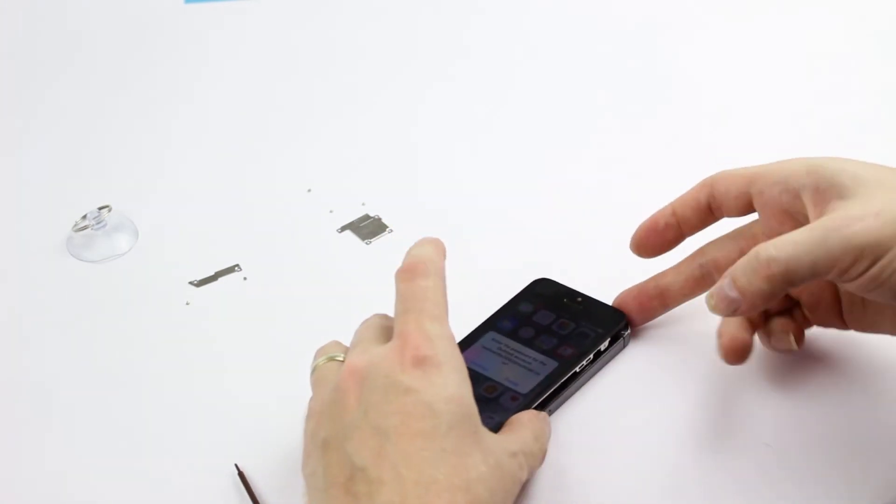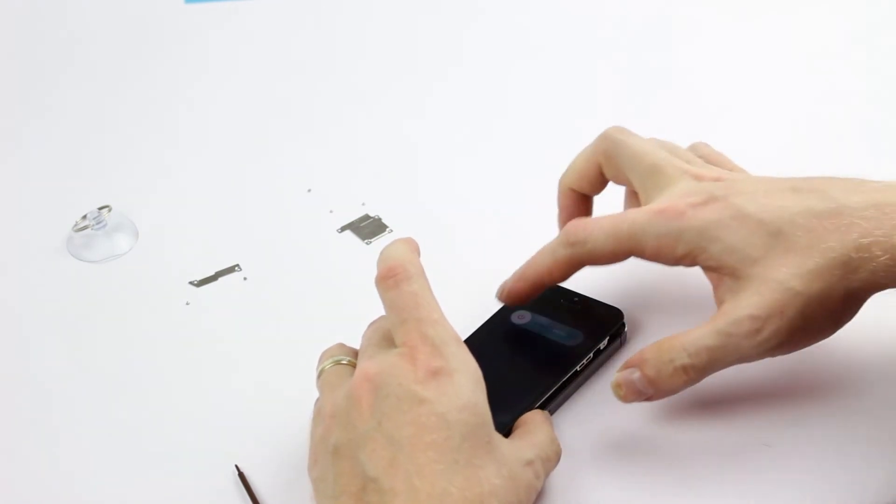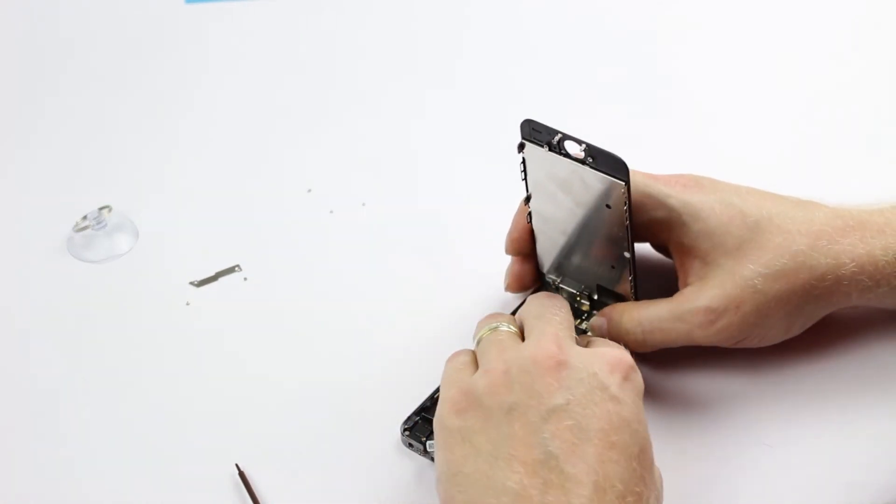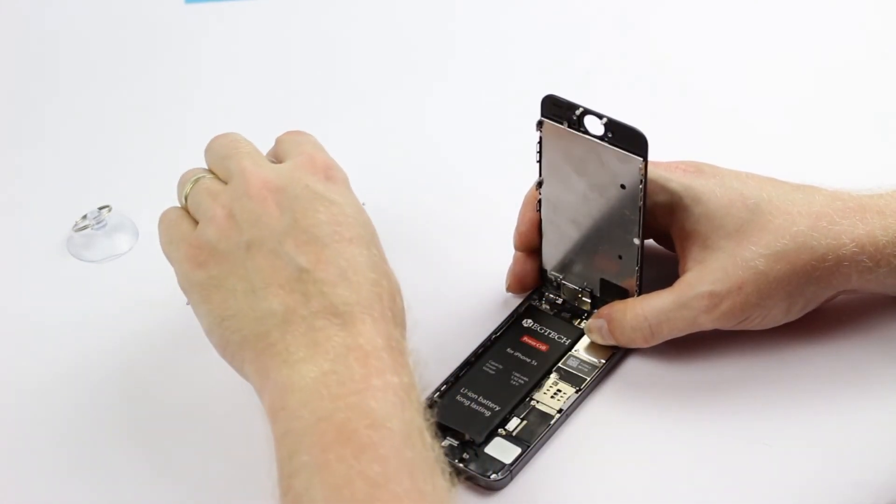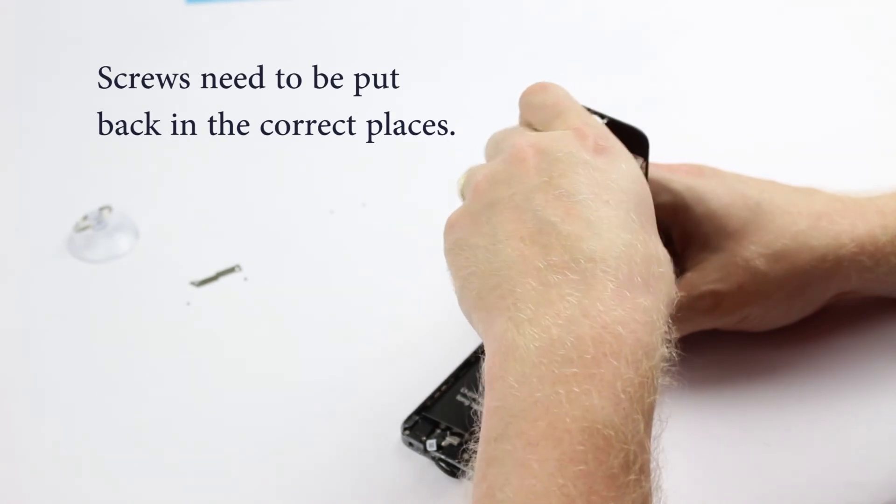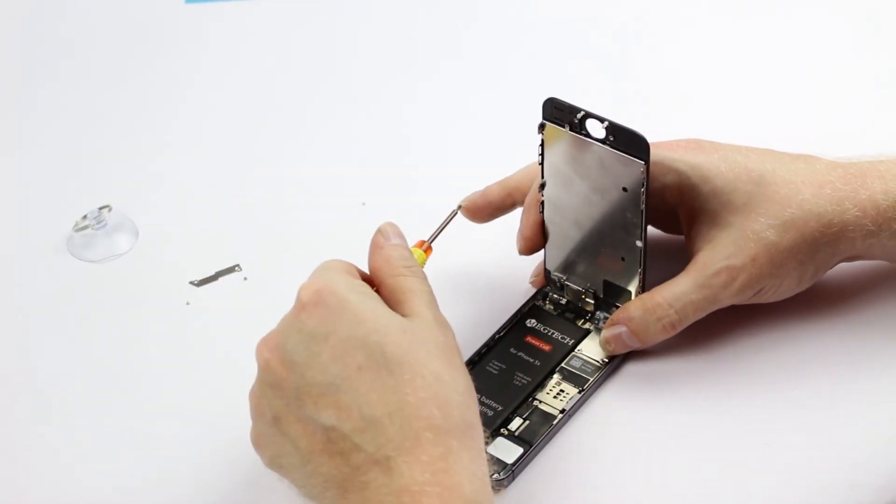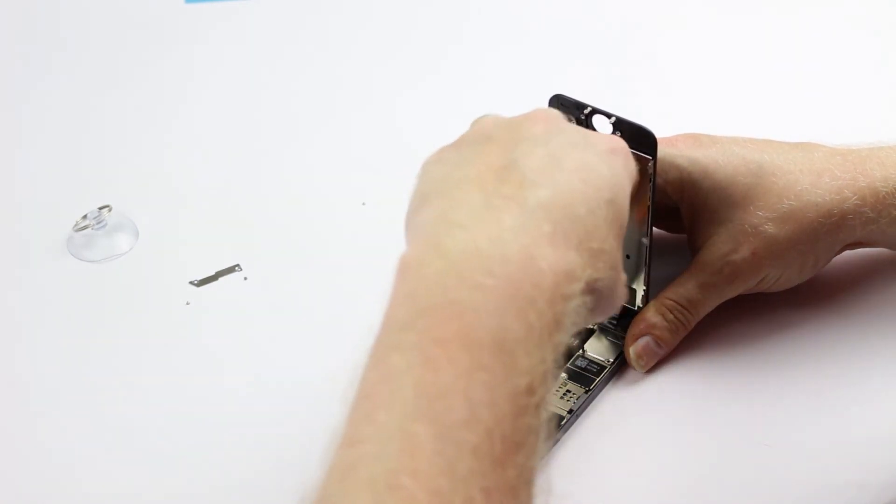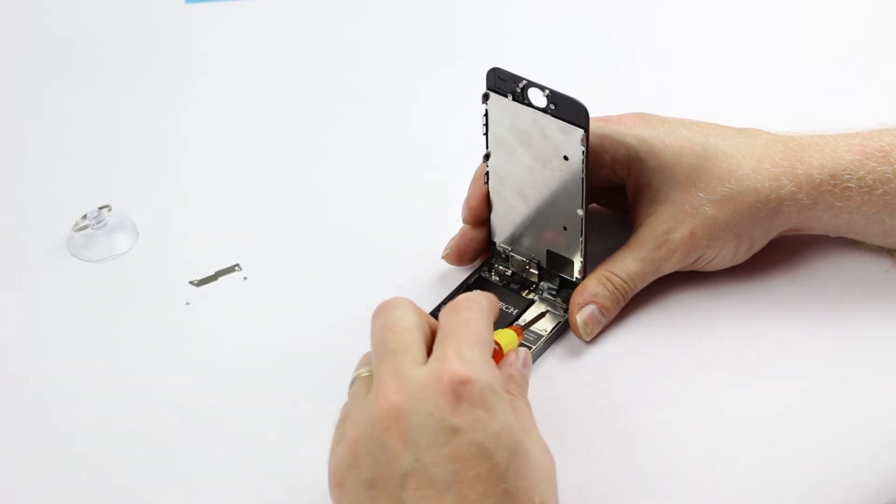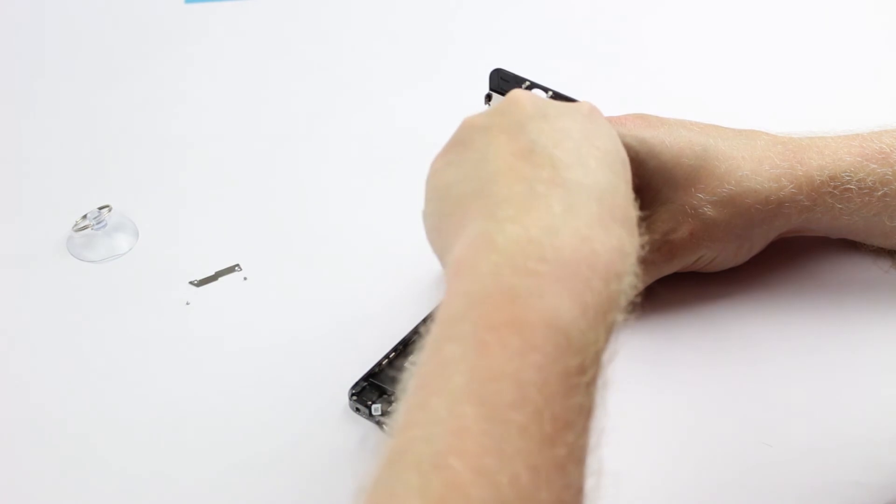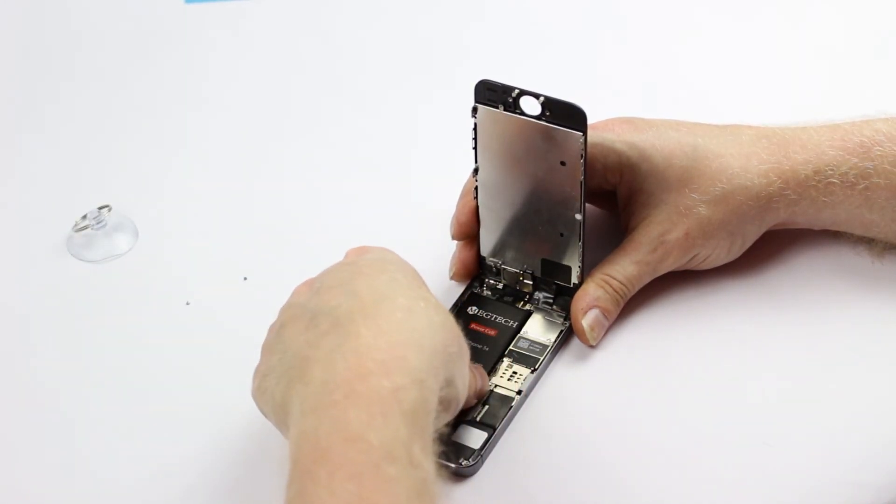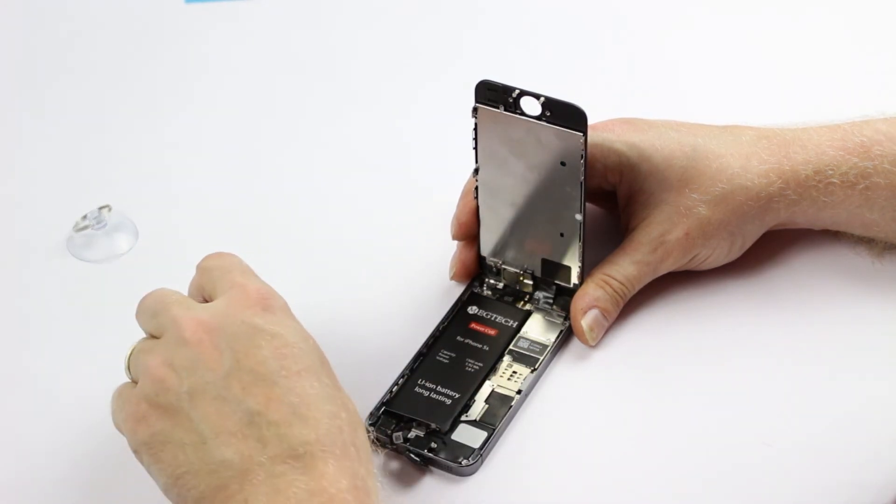I'll go ahead now and just turn it back off, because there's no point leaving it on. And what I'll do now is, I'll just put the metal plate back in. So that's the top screw, the bottom left screw. And the bottom right screw. Battery's in place. I'll just pop the metal plate back on top of the battery connector.